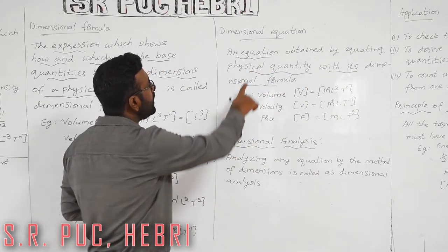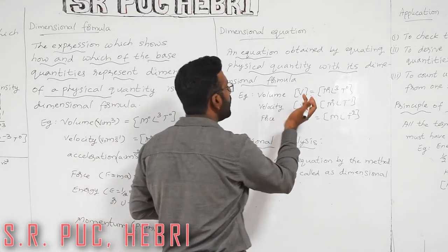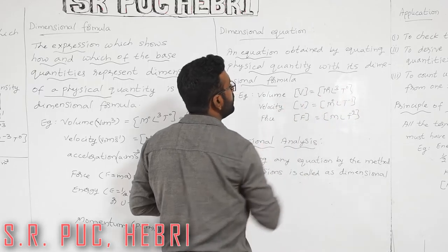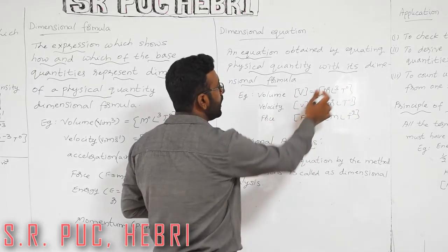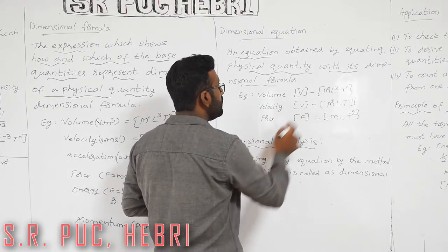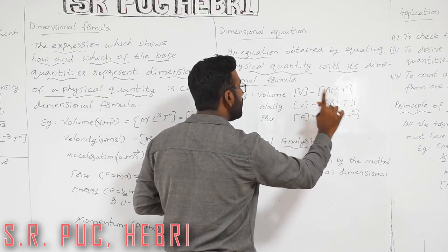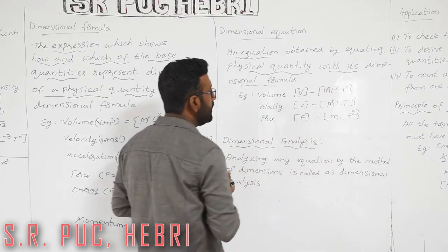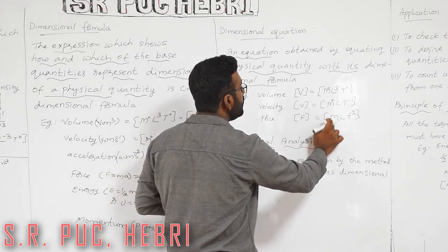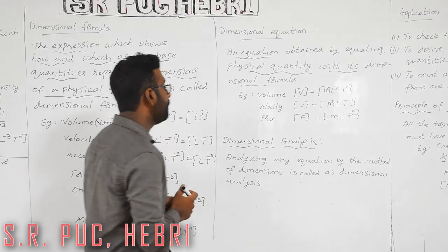An equation obtained by equating a physical quantity with its dimensional formula: for example, volume V = M⁰ L³ T⁰; velocity v = M⁰ L¹ T⁻¹; force F = M¹ L¹ T⁻².